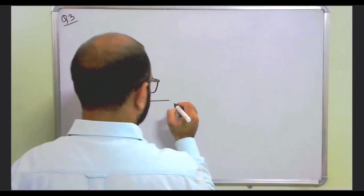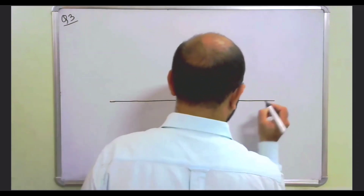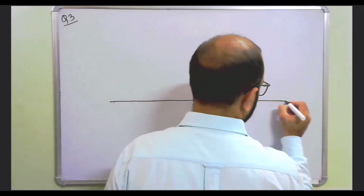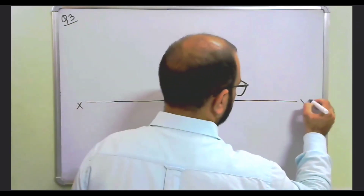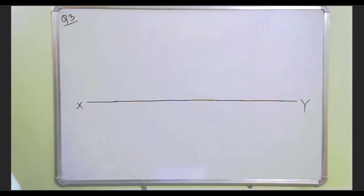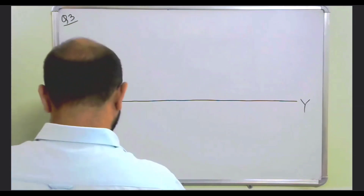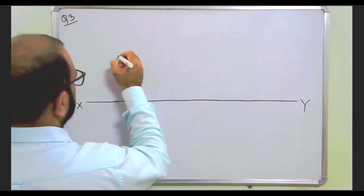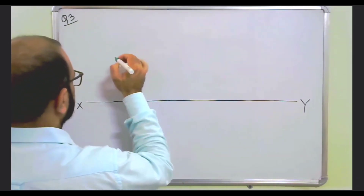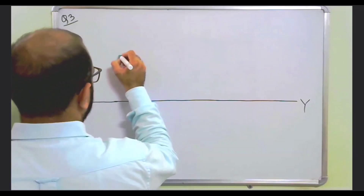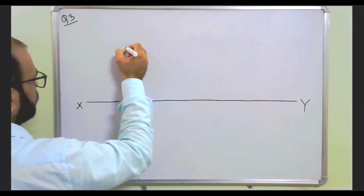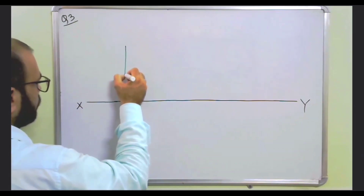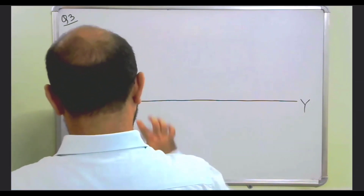First of all, draw the XY line. This is X and this is Y. Let us locate the point. Always make a habit of drawing the projection line first, so draw a projection line like this.